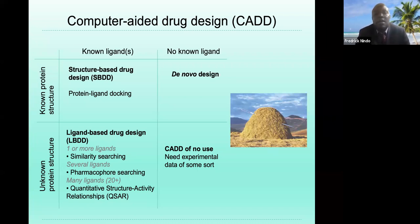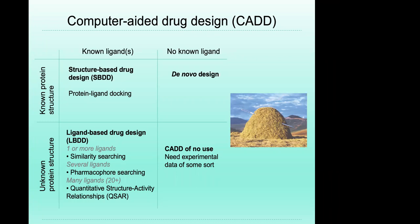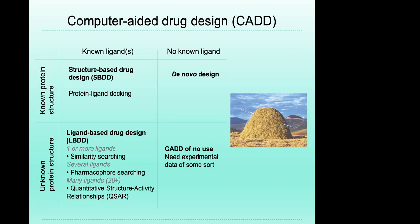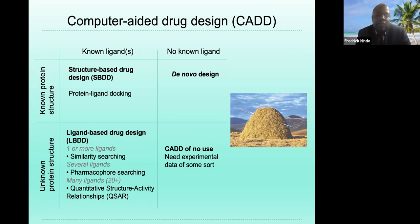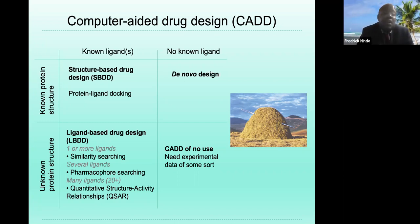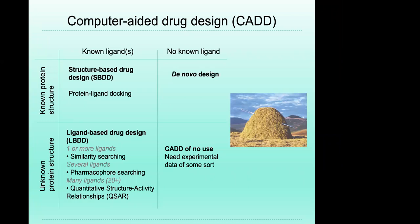If you have no known ligand, you will try several molecules at your disposal — this is called de novo design. You study from scratch because you're not starting from a molecule that you know. If you have a non-protein structure and no known ligand, you will be doing what we call ligand-based drug design, with one or more ligands, doing similarity searching.